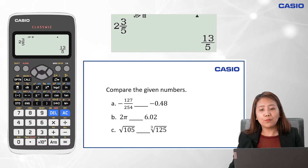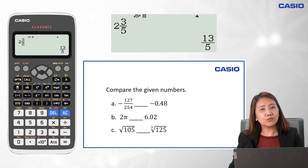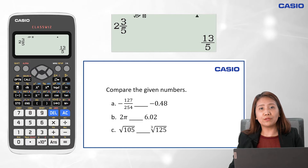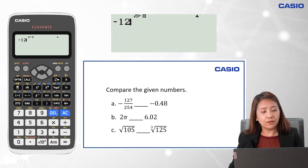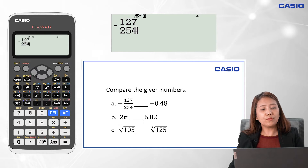We are asked to compare the given numbers. Let us try to write all the numbers in decimal form to easily compare each item. Let's start with letter A. Let us convert negative 127 over 254 to decimal by keying in negative 127, followed by the fraction key, then the denominator value of 254.